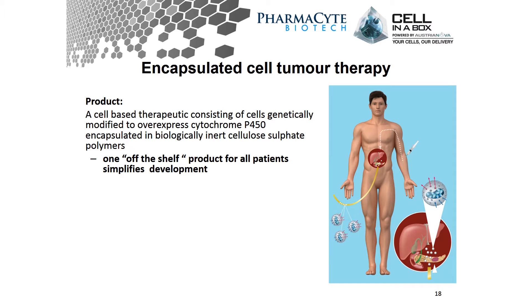What we're working with here is a HEK293 cell, as Walter's already mentioned. It's been genetically modified or pre-programmed to overexpress a particular enzyme — cytochrome P450 — and then the cells have been encapsulated in cell-in-a-box beads. What's important about this product is it is a one-cell-for-all-patients solution. It's an off-the-shelf product that can be used in all patients, so it's not patient-specific, unlike many other cell therapies.